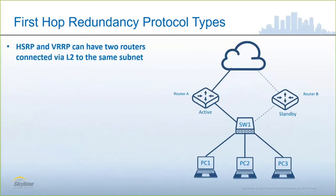Speaking specifically to HSRP and VRRP, in a typical implementation, HSRP or VRRP would have two routers acting redundantly for each other. They would have Layer 2 connectivity to each other. What you see here is an active router, Router A, and a standby router, Router B. They can both talk to each other via Switch 1. The dotted line going to Router B does not mean there is no connectivity — it means it's not handling the responsibilities of the default gateway at this time. But there is definitely Layer 2 connectivity because the two peers will send keep-alives and will actually send conversation to each other.